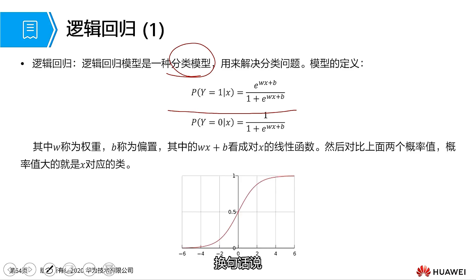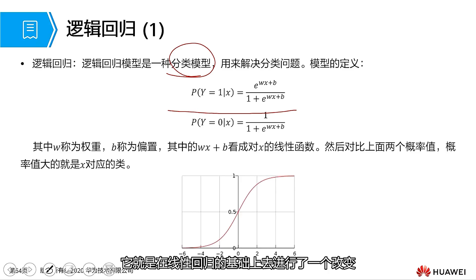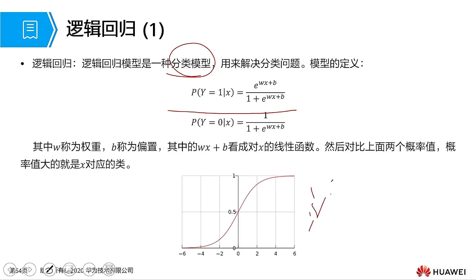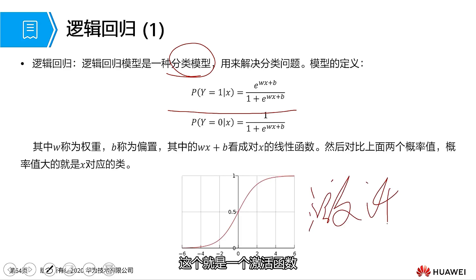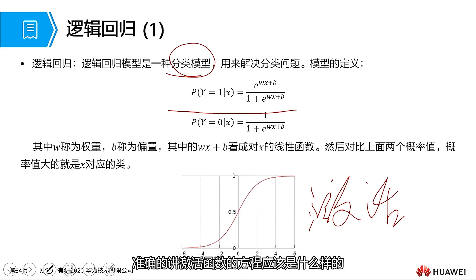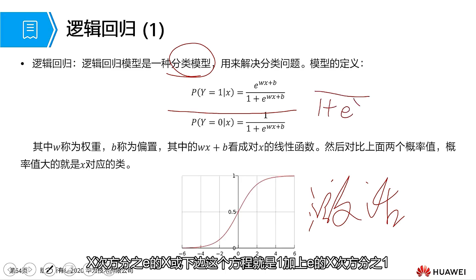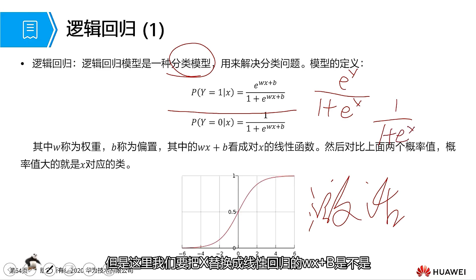To be precise, the equation of this sigmoid activation function is 1 divided by (1 + e^(-x)). Here, we need to switch this x to the linear regression expression wx + b. That gives us the logistic regression equation. So we have learned about logistic regression and its relationship with linear regression.